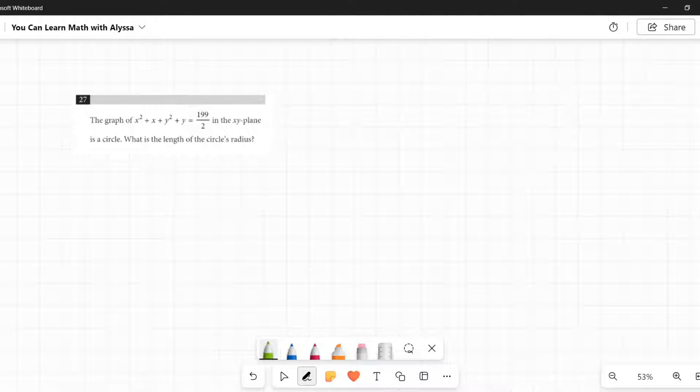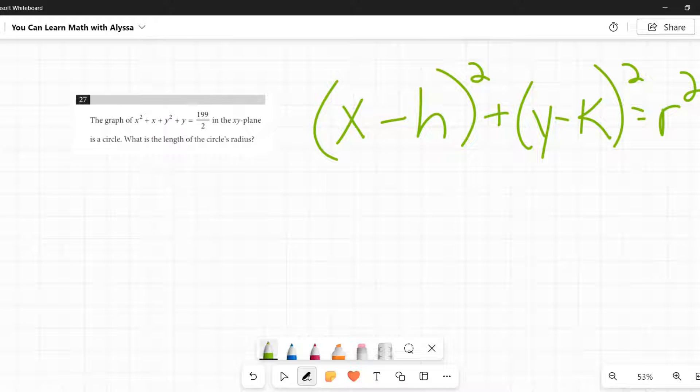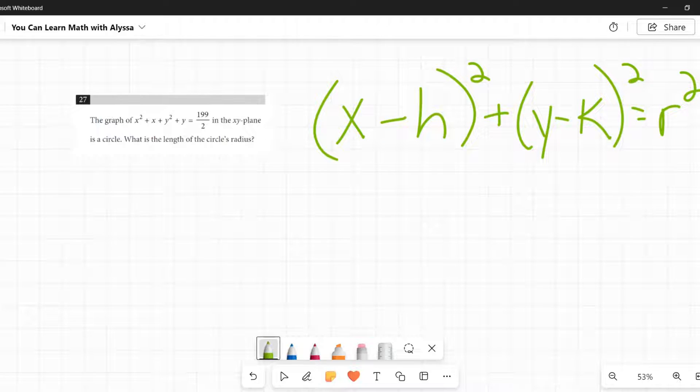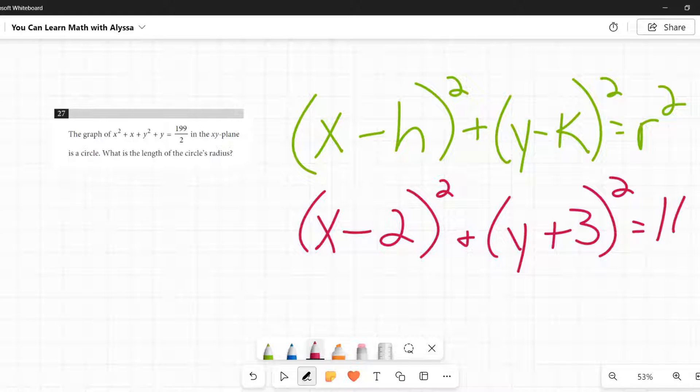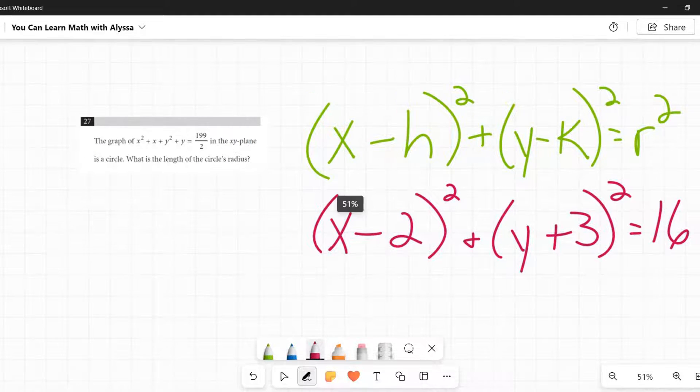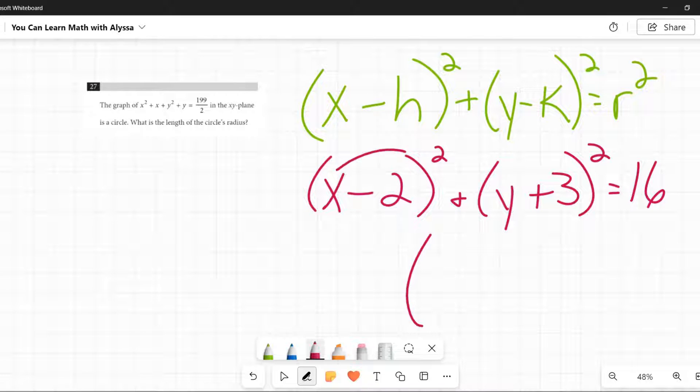The formula for a circle looks like this: x minus h squared plus y minus k squared equals r squared. So we have these two squares, these two perfect squares. It's always the opposite because remember, this is minus h, but we just want h. You take the opposite.